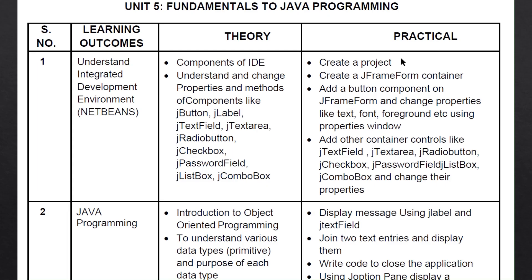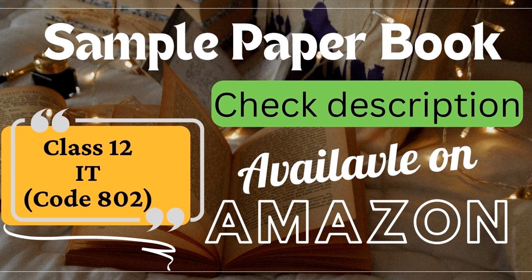So that was all for today. Till now we have discussed the first three topics of practical: we created a project, we created a JFrameForm container, then we added a button to it, and discussed the properties of JFrame and JButton. I hope all these are clear to you. If you have any confusion please ask in the comment section. In the next video we will study the next topic. If you want to purchase Class 12 IT code 802 sample paper book, the links are given in the description.